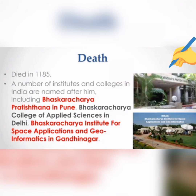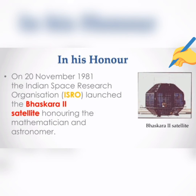Bhaskara Second died in 1185 CE. A number of institutes and colleges in India are named after him, including Bhaskara Acharya Pratishthan in Pune, Bhaskara Acharya College of Applied Sciences in Delhi, and Bhaskara Acharya Institute for Space Applications and Geoinformatics in Gandhinagar. On 20th November 1981, the Indian Space Research Organization (ISRO) launched the Bhaskara Second satellite in his honor.